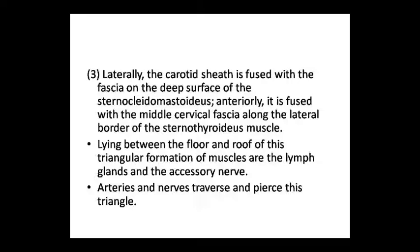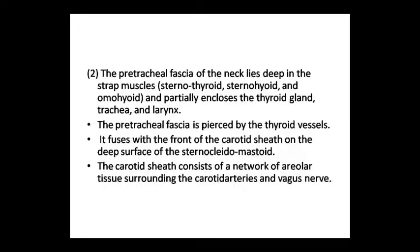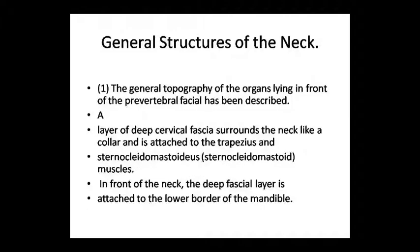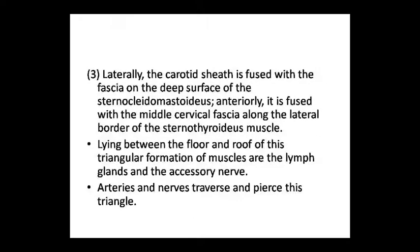The triangular formation of muscles has a floor and a roof. Lying between the floor and roof of this triangular formation are the lymph glands, vessels, and nerves. This is a triangular structure which involves the anterior and prevertebral fascia - this is the general topography. These triangular layers contain lymph glands, vessels, and nerves, and arteries and nerves traverse within this triangle.